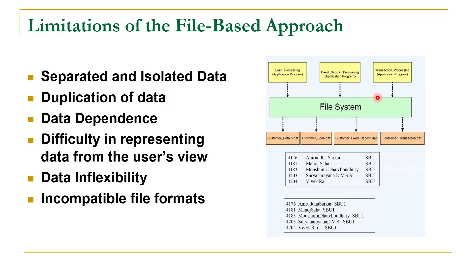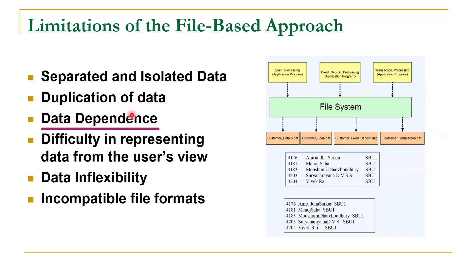Application programs are directly dependent on the way in which data is stored. For example, if data is stored in a text file with tab separation, this information must be mentioned in the application program. If data is stored in a comma-separated way, that must also be coded in the program. This concept is called data dependence, and file-based systems result in this problem.